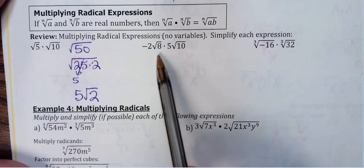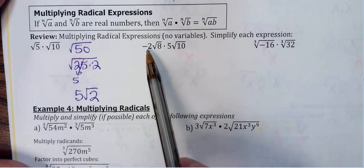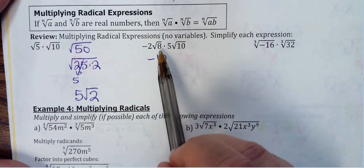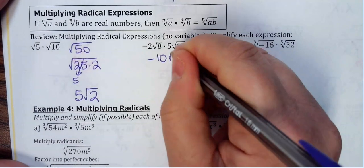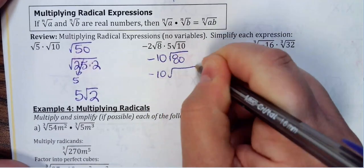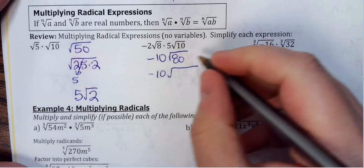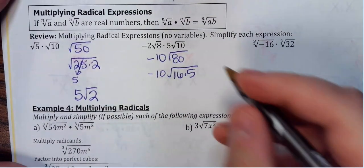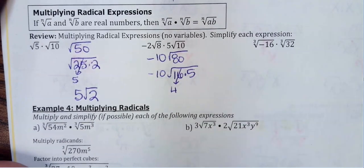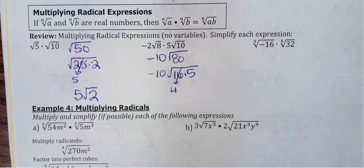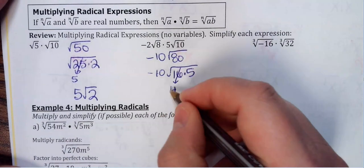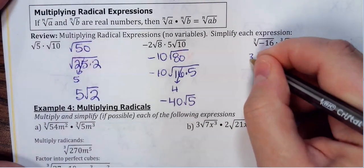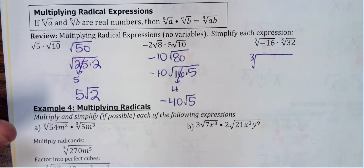If you have numbers in front of the radical, multiply those together first. For -2√8·5√10: multiply -2×5 = -10 out in front, then multiply under the radical: 8×10 = 80. The biggest perfect square going into 80 is 16, so rewrite as 16×5. √16 = 4, and since -10 already exists out front, multiply: -10×4 = -40. The answer is -40√5.